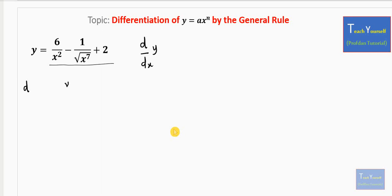Let's have y equal to 6, which we can rewrite as 1 over x squared. Then we have minus 1 over root of x power 7 plus 2. From here we can have y to be equal to 6.